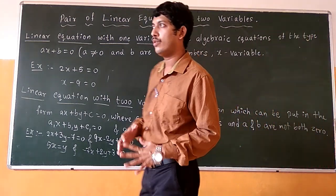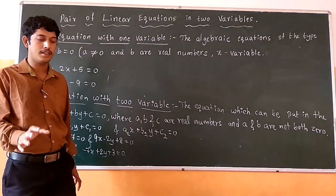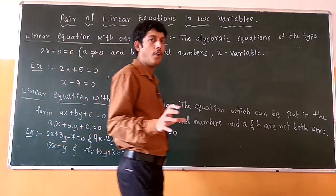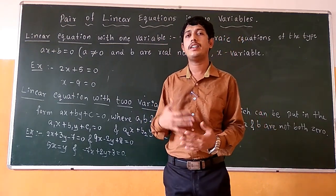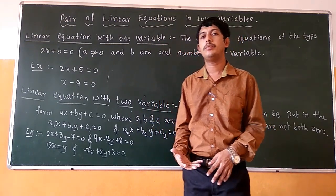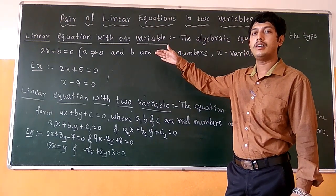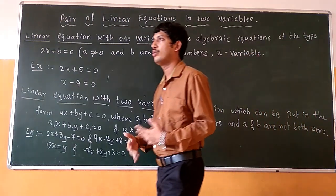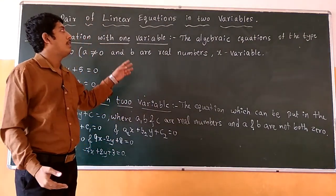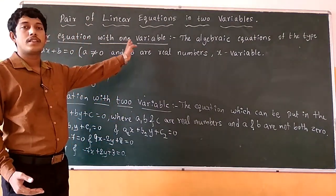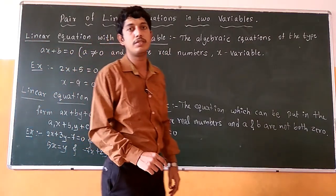So what is meant by equation? An equation is the form in which it contains a variable or it has either a constant term, and it must have some signs — either positive or negative — and the left hand side of the equals sign must be equal to 0.